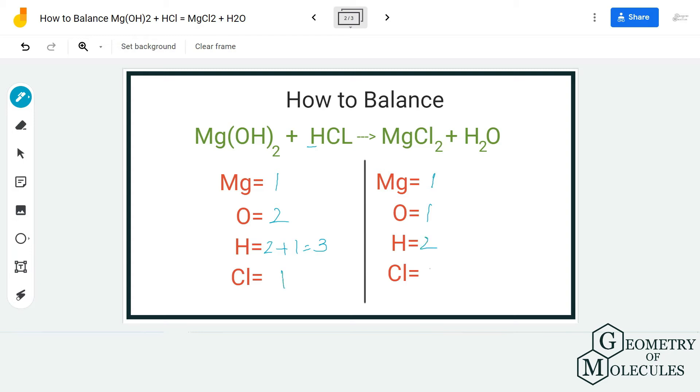For chlorine we have one on the reactant side and two on the product side. Once you know the number of atoms on both sides it becomes easy to balance this equation. We are first going to start with oxygen atoms. We are going to balance hydrogen atoms at the last because this is something that you can balance and move forward.